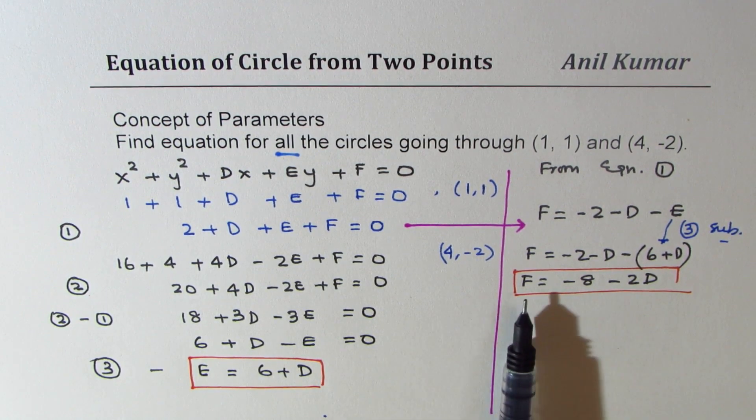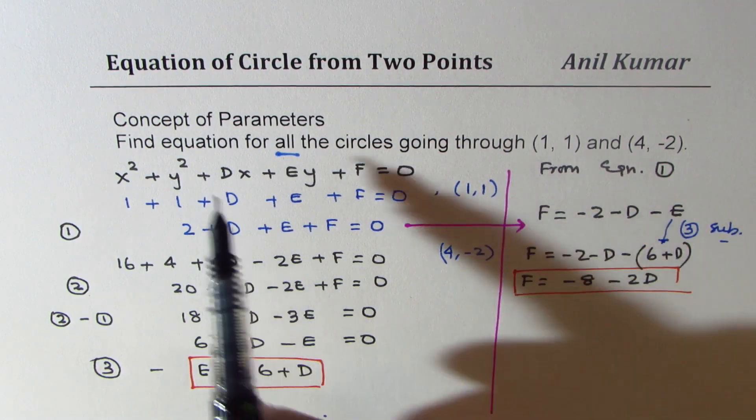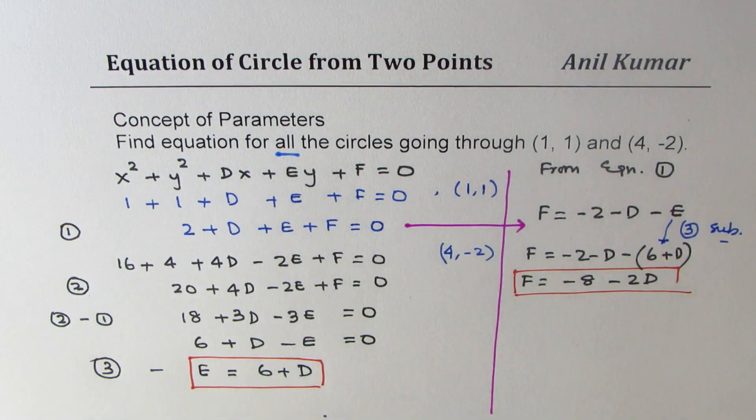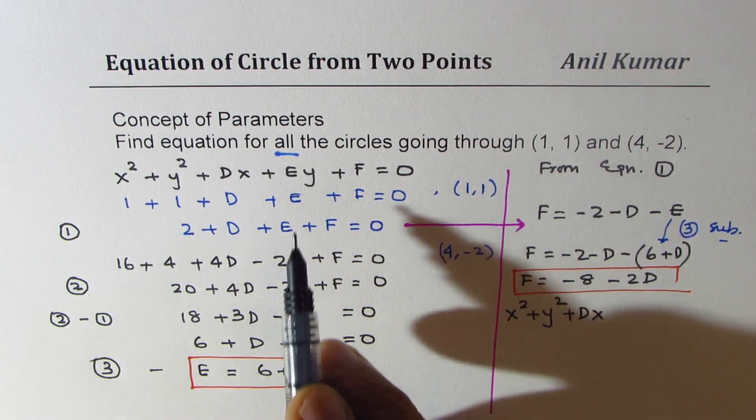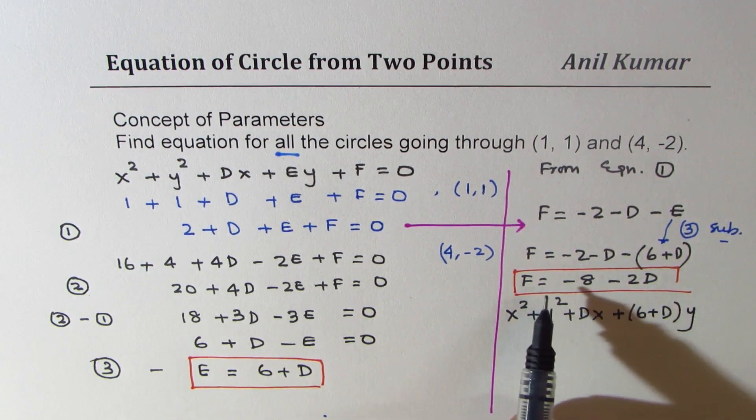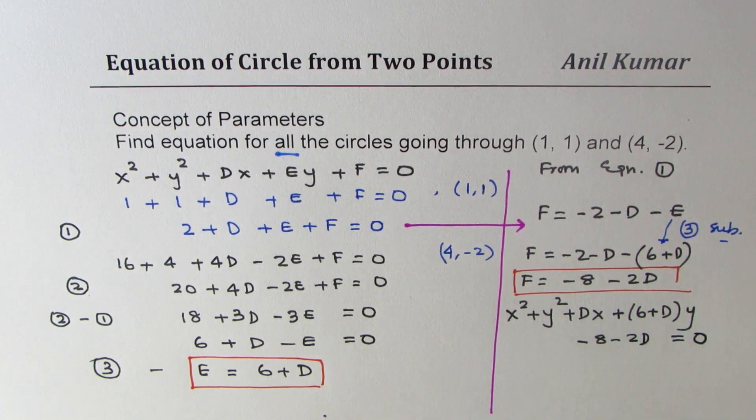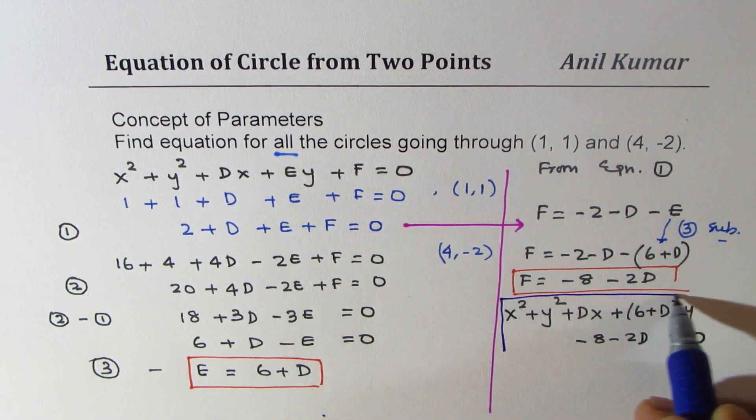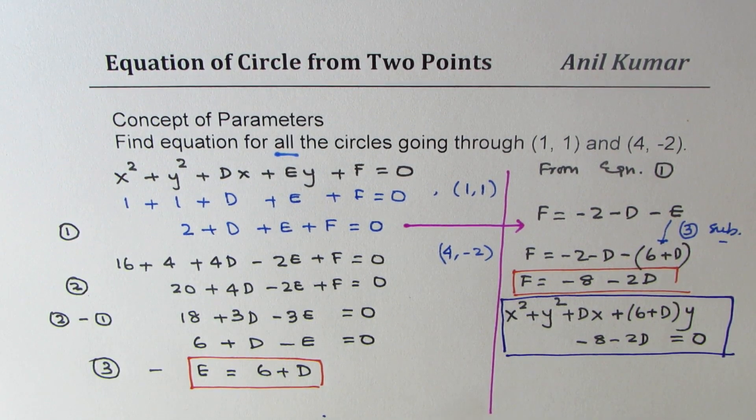Now if I substitute these two values in this equation, I get one equation which has d in it as a parameter. If I substitute e as 6 + d and f as -8 - 2d, in our main equation we get x² + y² + dx + (6 + d)y + (-8 - 2d) = 0. So this particular equation is the equation of a circle in terms of d. So d is called the parameter. d could have any value.